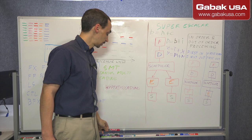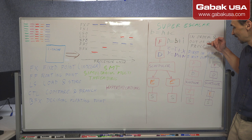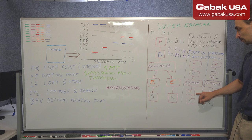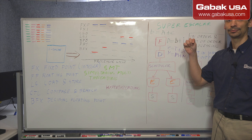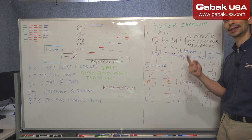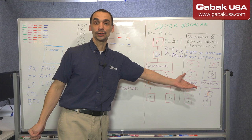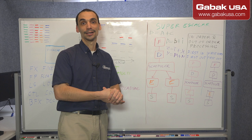Now we're going to talk about in-order processing — first-in, first-out. It's very simple: one instruction comes in, goes through fetch, decode, scheduler, execution, and store. The first in is the first out. It doesn't matter if the first instruction takes 10 cycles and the second one takes just one. The whole process will stall until that instruction finishes, and then the next one can proceed.